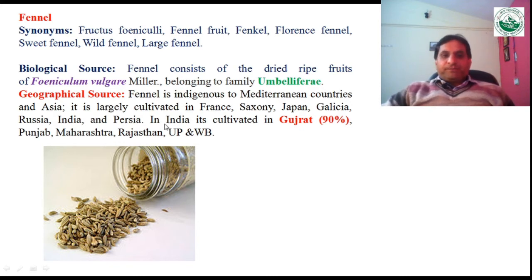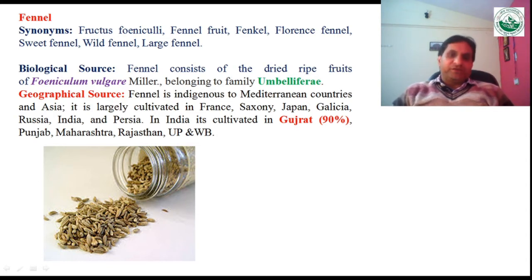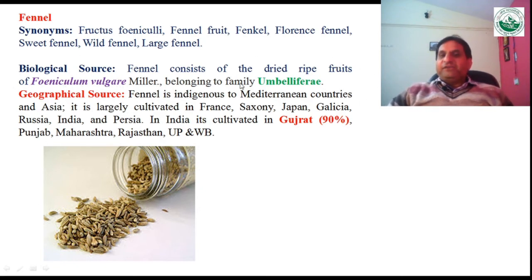Particularly in India, fennel is commonly cultivated in Gujarat, Punjab, Maharashtra, and Rajasthan. Most of the supply of fennel in India comes from Gujarat — approximately 90 percent. The botanical name is Foeniculum vulgare, it belongs to family Umbelliferae, the useful part is the fruit, and in Hindi it is commonly known as saunf.